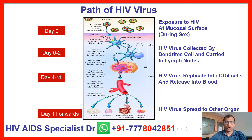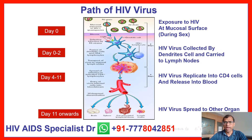So what is the path of the HIV virus after it contacts our body and how does it proceed? On day 0, that means the exposure day, HIV is exposed at the mucosal surface during sexual activity. In the next 2 days, the HIV virus is collected by dendritic cells and carried to the lymphatic system, that means the lymph nodes.